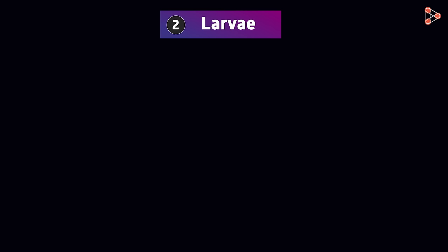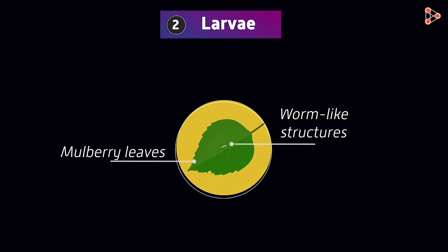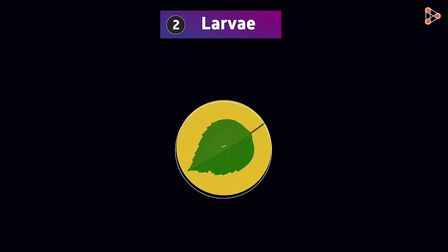The next stage is where the eggs develop into larvae. Larvae are worm-like structures that appear somewhat like this. The larvae grow in size by feeding themselves on the mulberry leaves. The growth stages of these larvae are also given a scientific name — the stages are called instar.